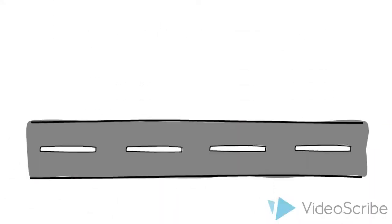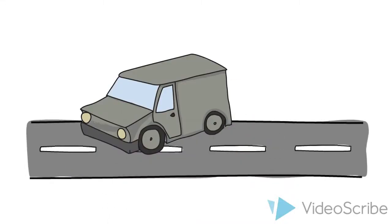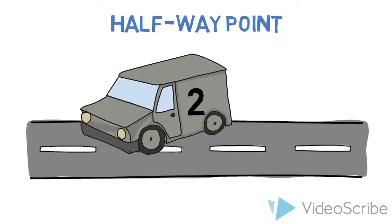Meanwhile, van 2 has driven to the halfway point and begins dropping off runners in the same format. Van 2 will drop runners all the way to the host.